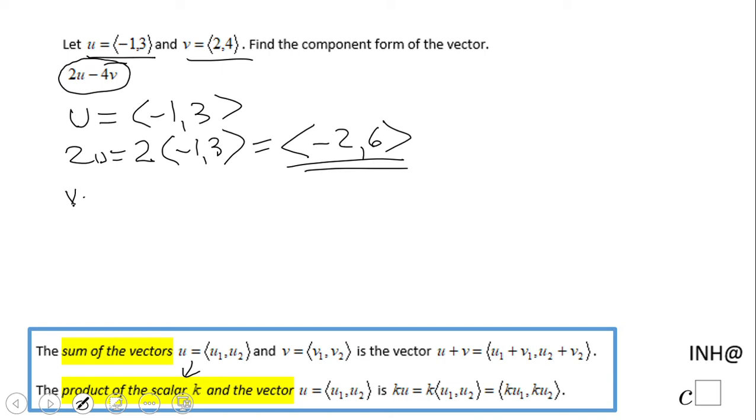For v we're going to do the same thing. The only difference is we're going to multiply by 4. So 4v is 4 times the vector v, which is <2, 4>, and that will be <8, 16>.